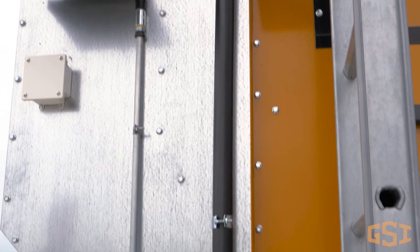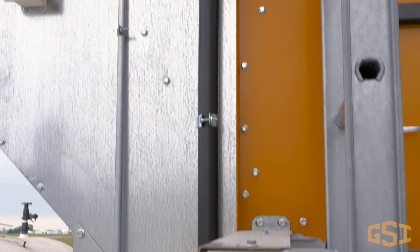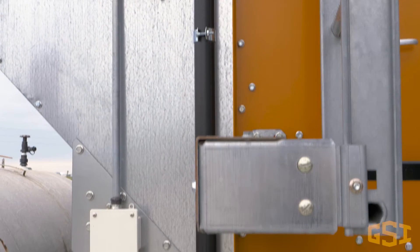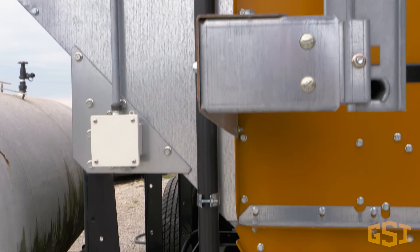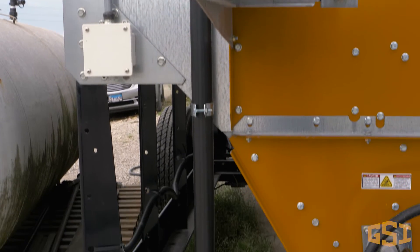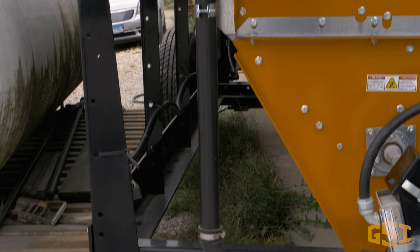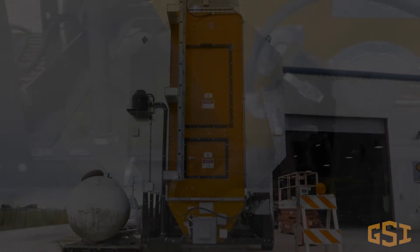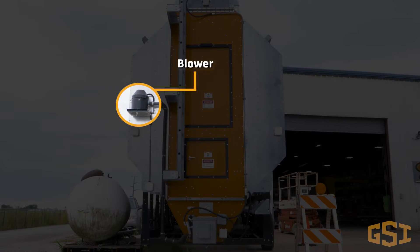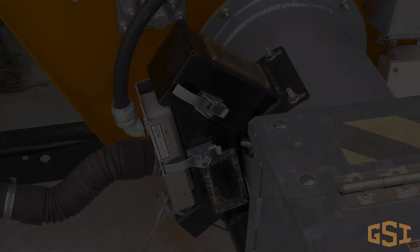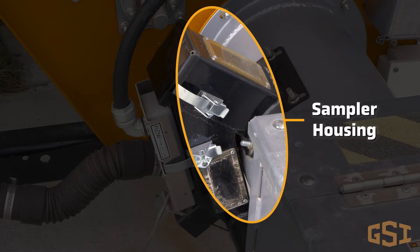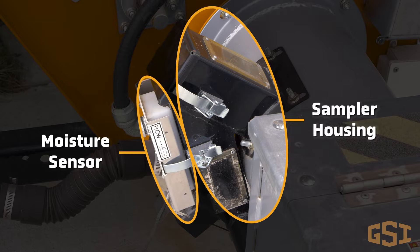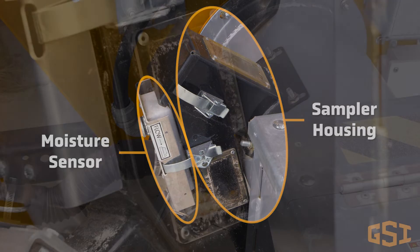Let's take a look at the main components that make up the static air moisture sampler. The main components of the blower sampling system are the blower, sampler housing, and moisture sensor.